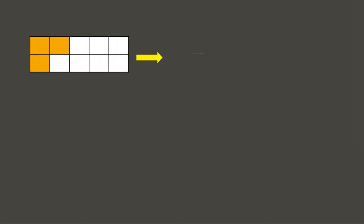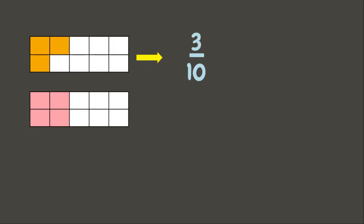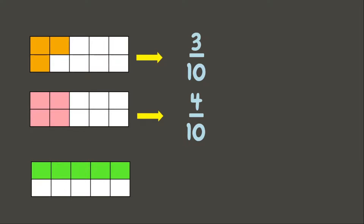Good day students! Previously we learned about fractions. Let's have a quick review by writing down the fractions of these representations. Are you ready? Let's start. The first one: we have three colored parts out of ten equal parts, and that fraction is three tenths. On the next one, we have four colored parts out of ten equal parts, and that is four tenths.